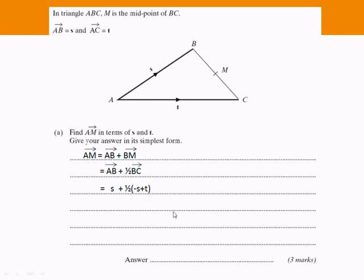Having got it this far, I can just treat it like regular algebra and multiply the brackets out. I've multiplied a half times minus S to give me minus a half S and a half times T to give me a half T. So I've got AM equals S plus minus a half S, which cancels out to a half S, plus a half T. I can simplify it, and it all comes out to a half S plus a half T.